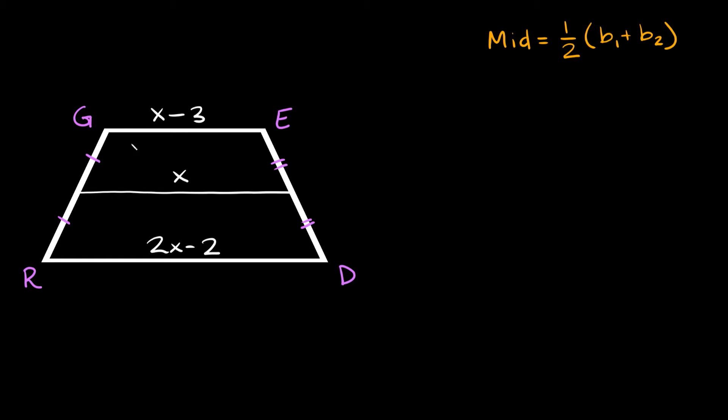All right, here's one more example. So again, we have our trapezoid right here, and then our three different lengths. So again, we can use the trapezoid mid-segment theorem that just says the mid-segment is equal to 1 half times the sum of the bases.